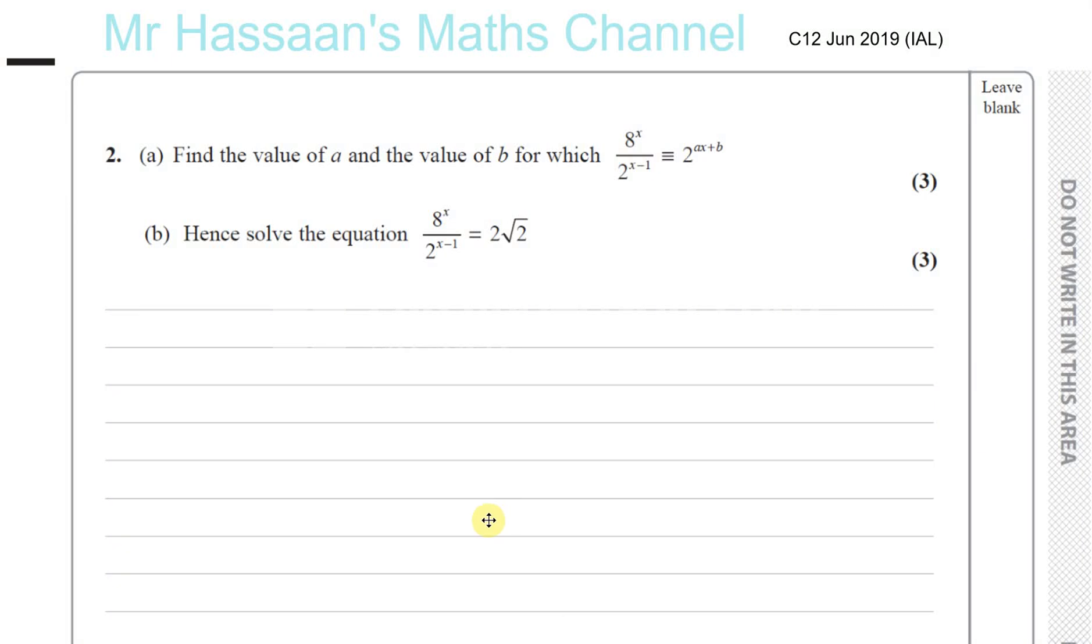Here we have question number two from C12 June 2019 international A-level paper. This question is about indices and part A tells us to find the value of a and b in this identity here.